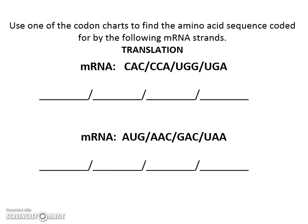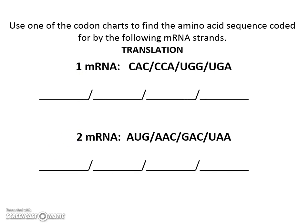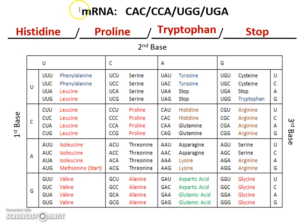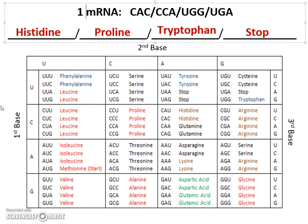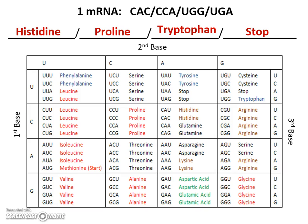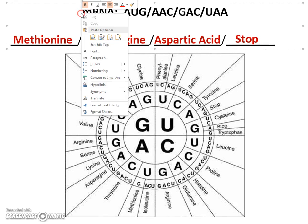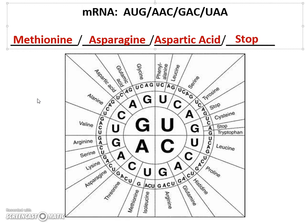Now practice using the codon chart. Go back in the presentation to one of the two charts, whichever you like, or use the handout provided in class. Start with the mRNA you previously wrote down — take DNA and turn it into mRNA — and use the codon chart to find CAC. If you did this right, CAC should be histidine. Pause the video now and take as much time as you need to decode the first and second mRNA strands. The answers to the first mRNA strand: histidine, proline, tryptophan, and stop. Stop is the stop codon that says we are done making a protein. For the second mRNA strand, you should have got methionine, asparagine, aspartic acid, and stop. Ask if you had any questions or couldn't figure out how to use the chart — we'll do more of this in class.